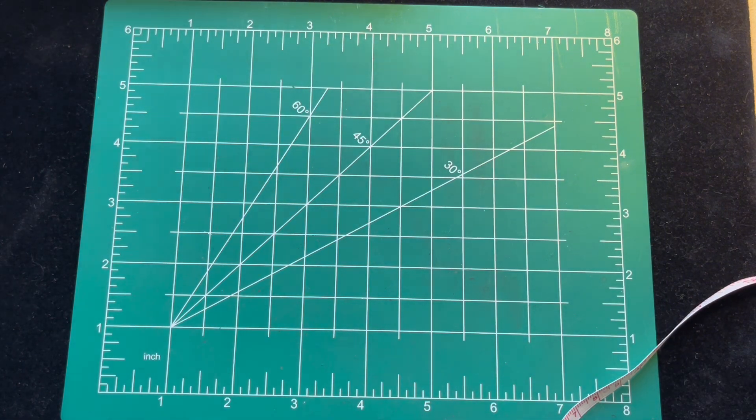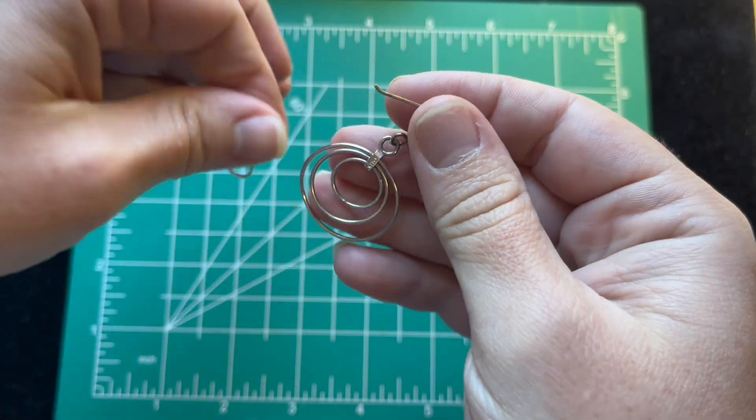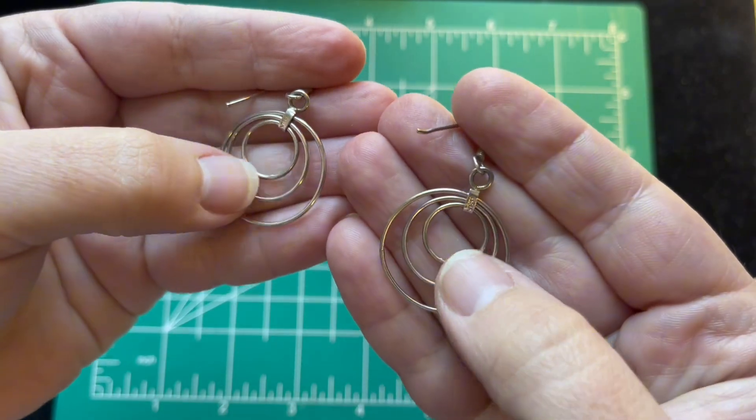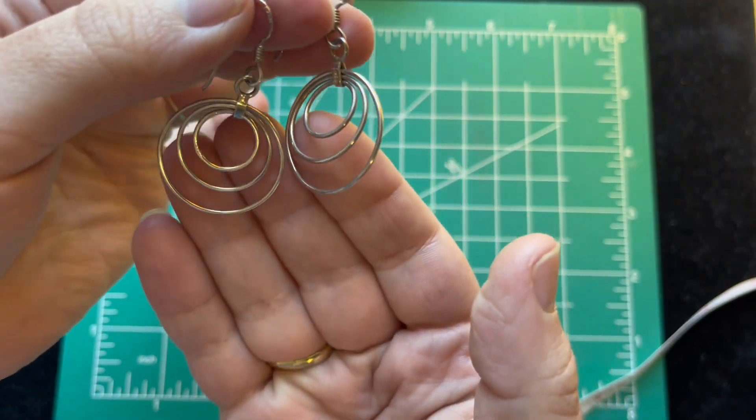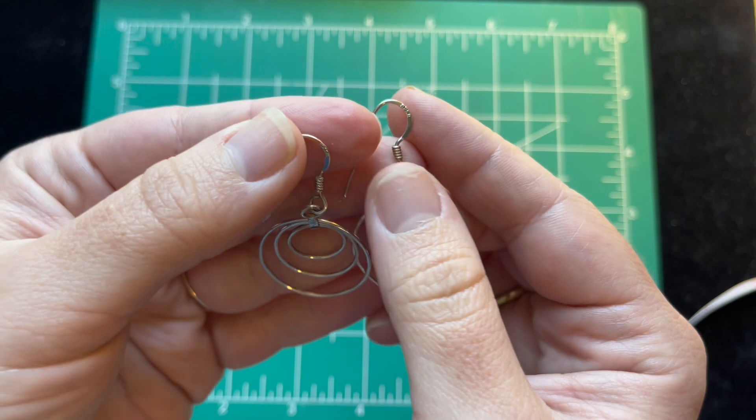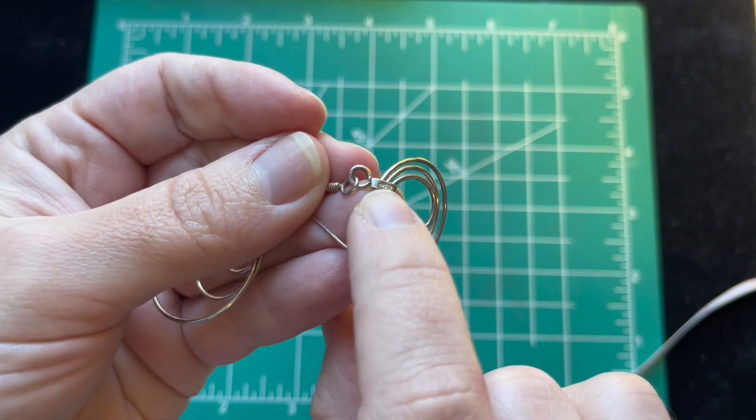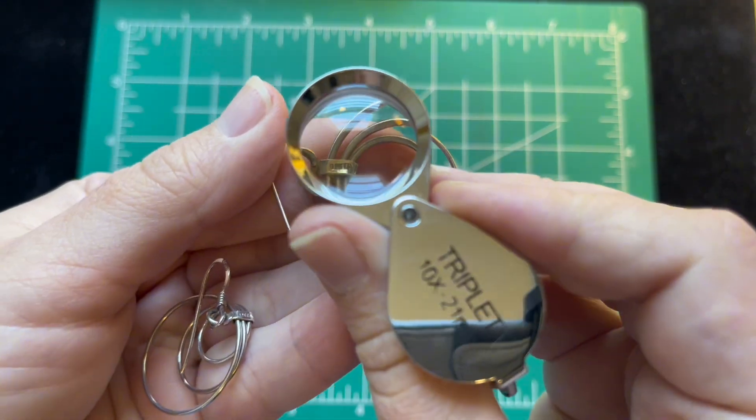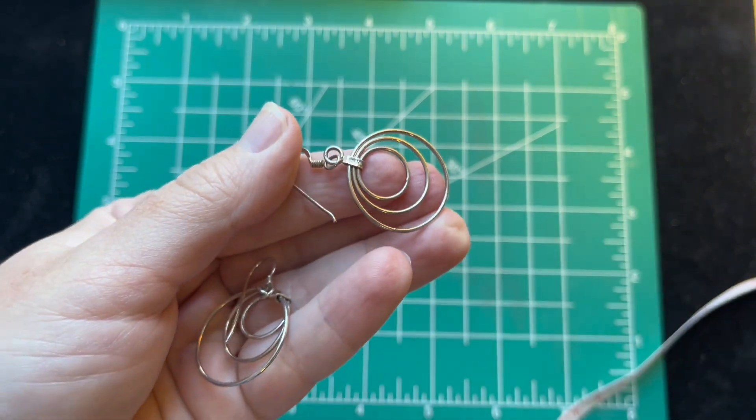Then the next piece I have are some more earrings. We have these dangly hook kind of stacked circles. There's three rings. They dangle really nicely. These are very simple and just really cute. And they're marked on the hook right here and also right here on the back of them. It says 925. I believe that's LA or IA. Not sure where these are made.